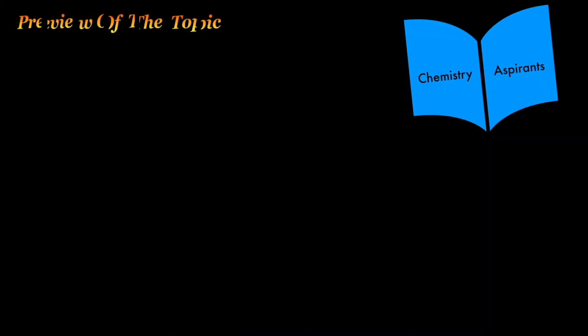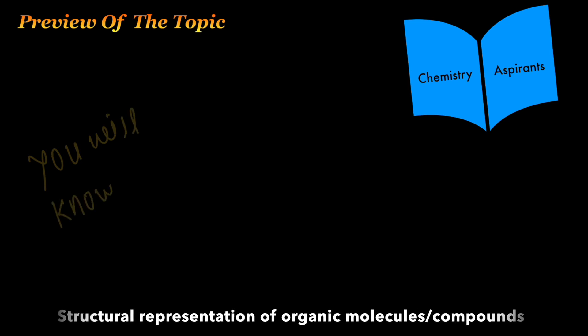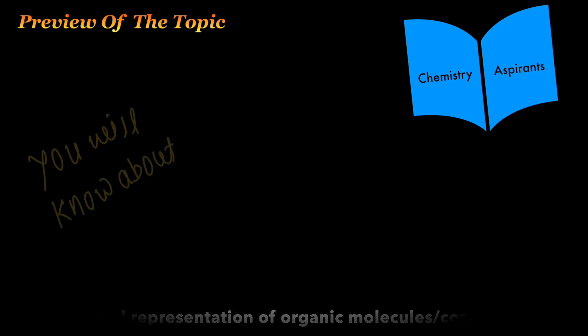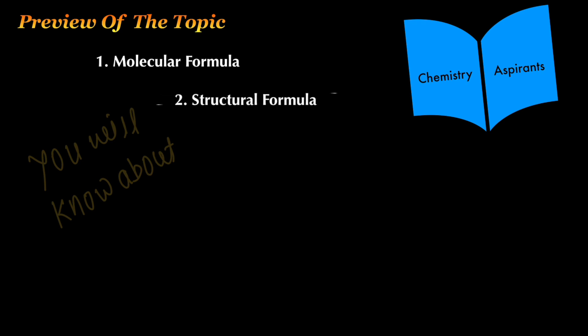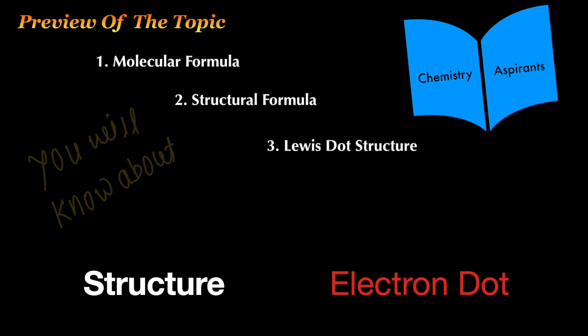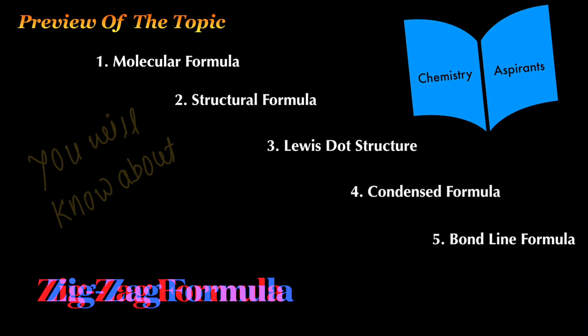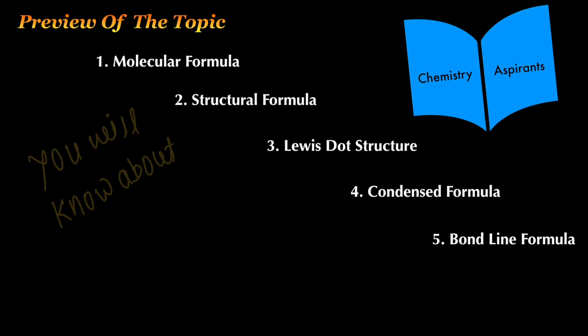In today's video, you will learn about five different ways for the structural representation of organic molecules: by molecular formula, structural formula, Lewis dot structure (also called electron dot structure), condensed formula, and lastly bond line formula or zigzag formula.